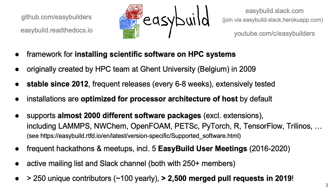Over 250 different people have made contributions to the EasyBuild project, and last year we merged over 2,500 pull requests. For more information check out our website and documentation, or take a look at some of the recorded talks that are available on our YouTube channel. The links are shown at the top of this slide.